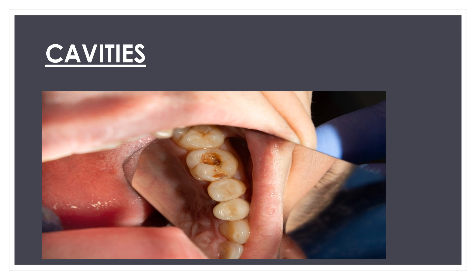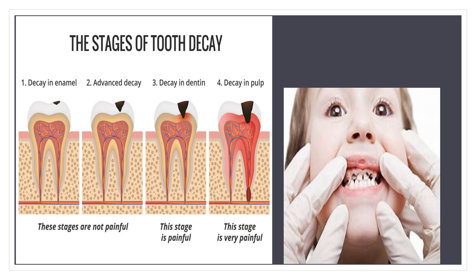First is cavity. Bacteria evade removal by brushing and saliva and damage the enamel and deeper structures of the tooth. You can see the damaging of the enamel and the cavity in the diagram. Most cavities occur on molars and premolars. The next is tooth decay, which progresses through stages: initial decay of enamel, advanced decay, decay of dentine, and decay of the pulp — the most painful stage. The initial two stages are not that painful.